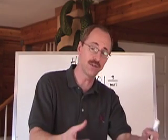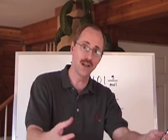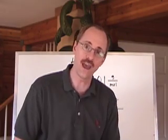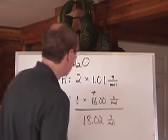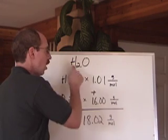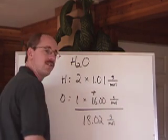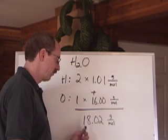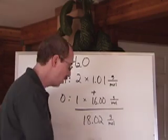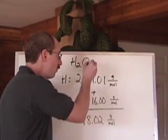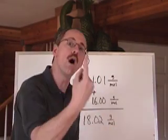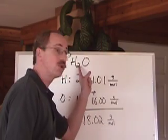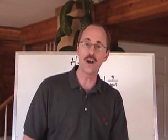So, if you have 6.02 times 10 to the 23 atoms of each, oxygen still weighs more than the hydrogen. What's the molar mass of water, then? You just take 2 waters at 1.01 and add them to 16 in your calculator, and you get 18.02 grams of water every time you have 1 mole or 6.02 times 10 to the 23 molecules of water.